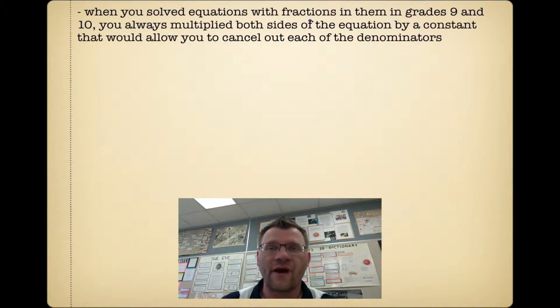When you solved equations with fractions in grades 9 and 10, you always multiplied both sides of the equation by a constant that would allow you to cancel out each of the denominators. For example, if we had 7/8x minus 5/4 equals 1/2x plus 2/3, we would choose a number to multiply each of these terms by that would get rid of all the denominators. In this case, it would be 24, because all these numbers go into 24. So you'd multiply each term by 24.